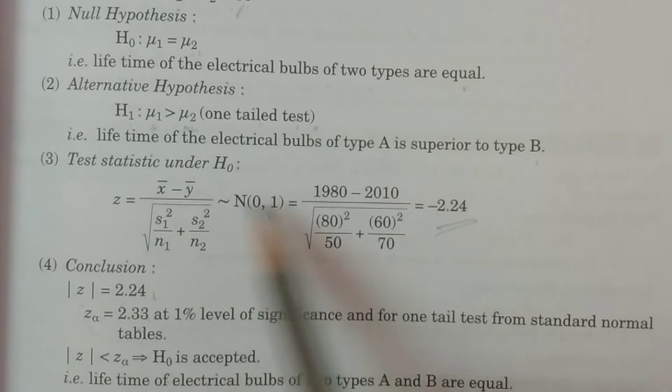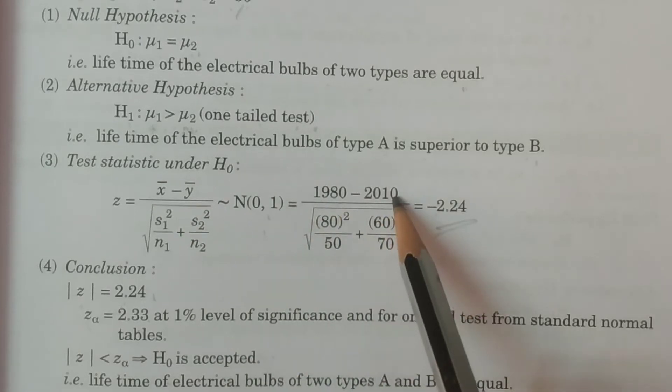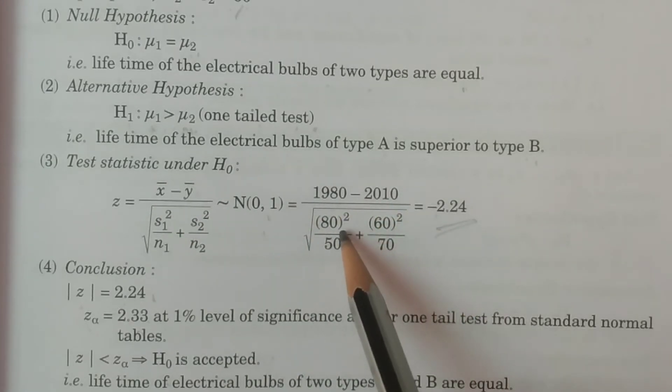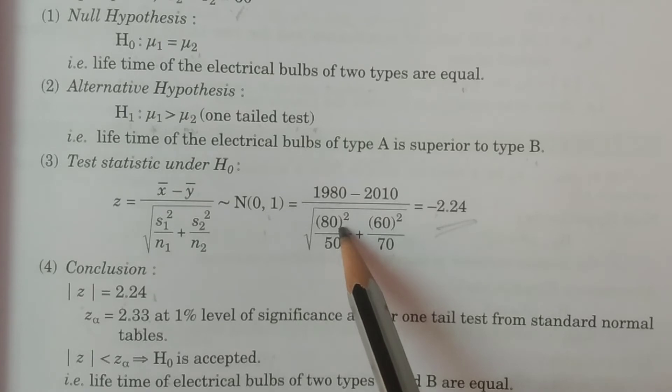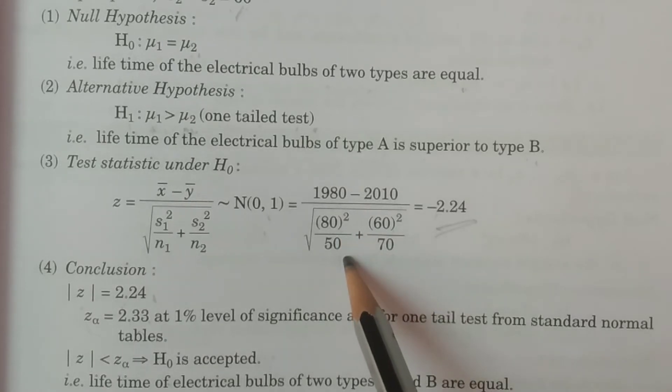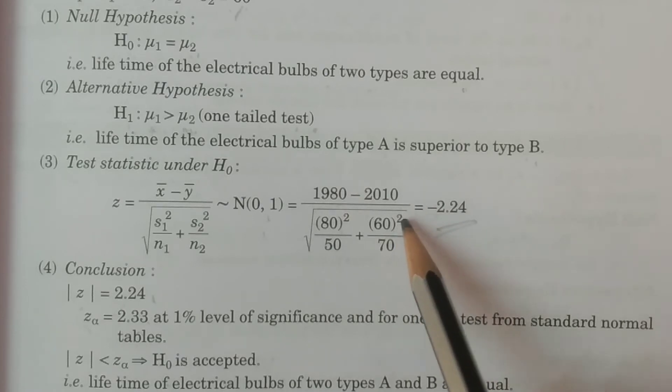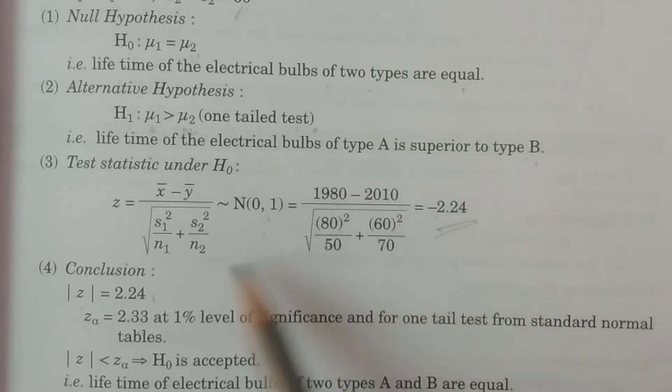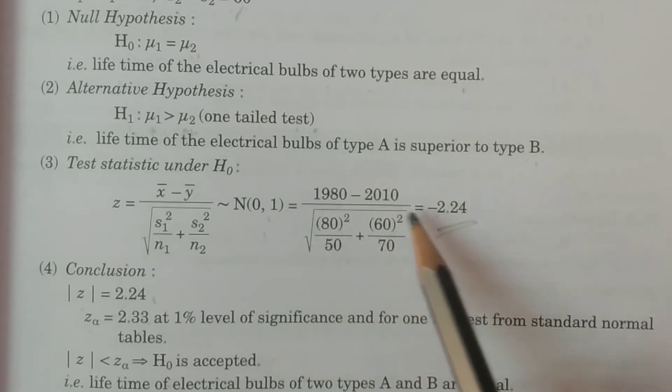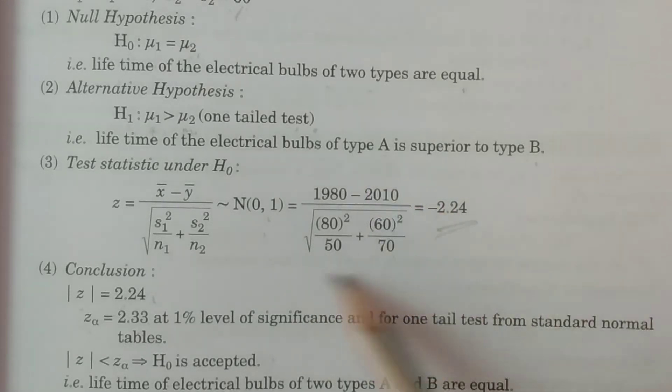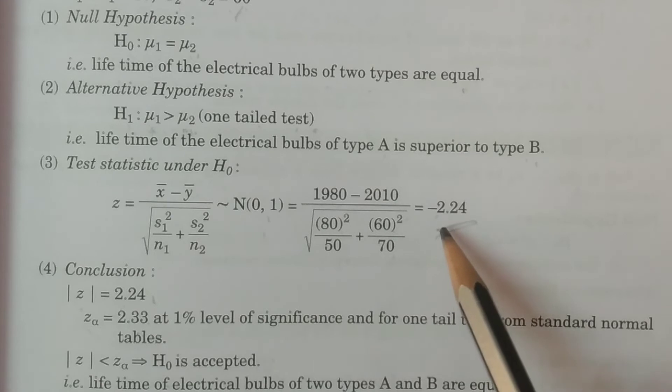Substitute values: x bar 1980 minus y bar 2010, s1 80 whole square divided by n1 which is 50, plus s2 60 whole square divided by n2 which is 70. If you calculate it, minus 2.24.